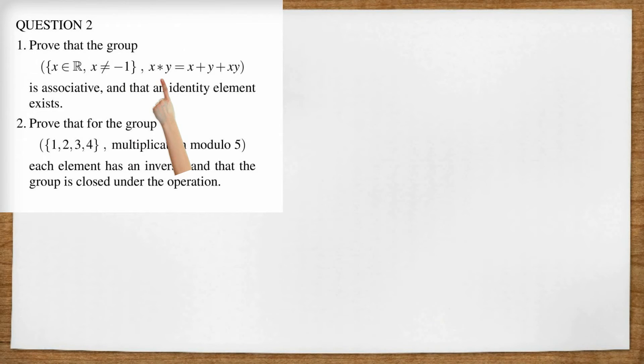So this star here works as follows. Here's an example, five star seven, well that equals five plus seven plus five times seven, which is 35 plus 12, 47.